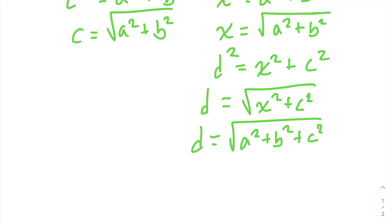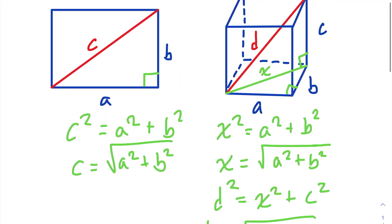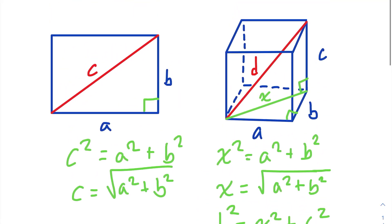In other words, any space diagonal of a rectangular prism will be equal to the square root of the sum of the squares of each side of the rectangular prism.